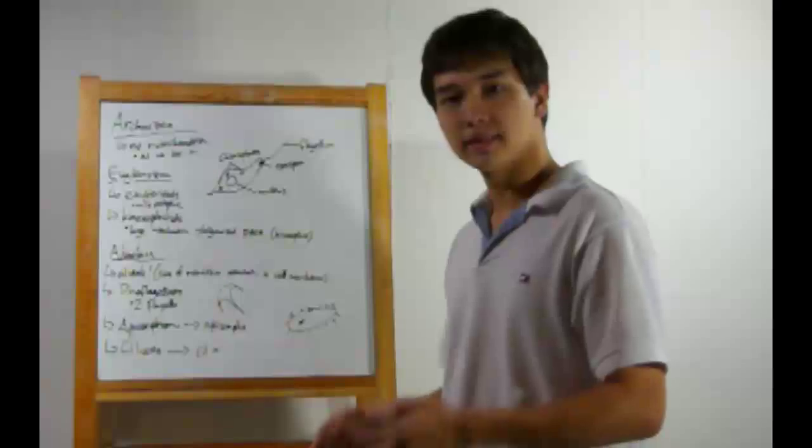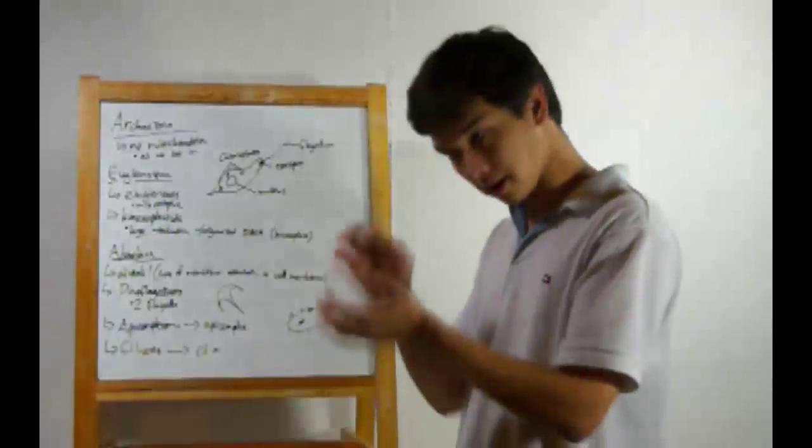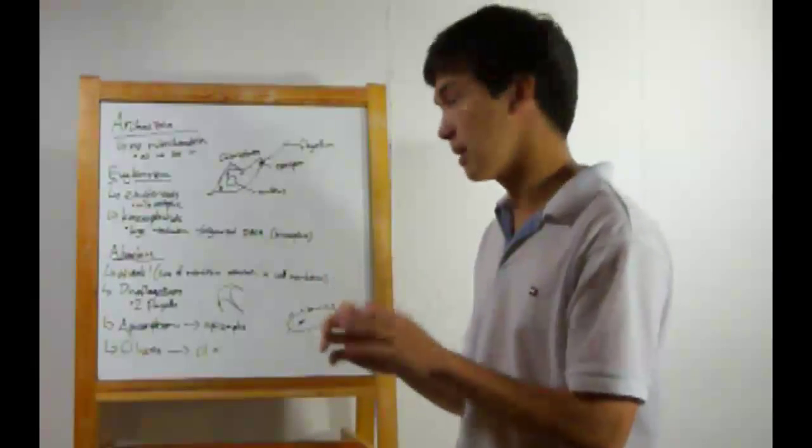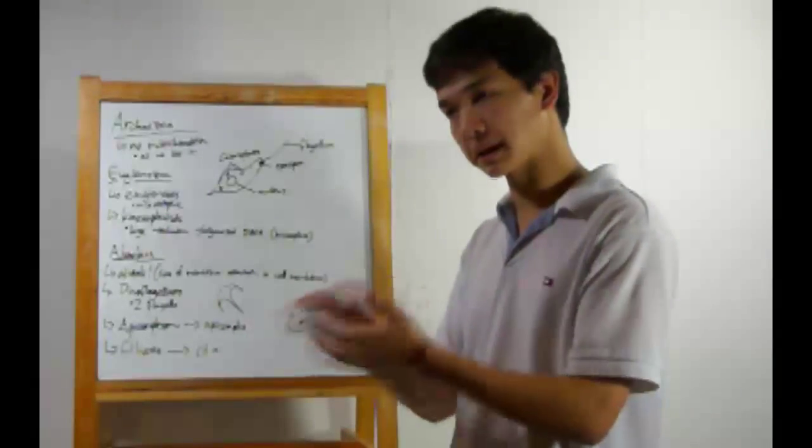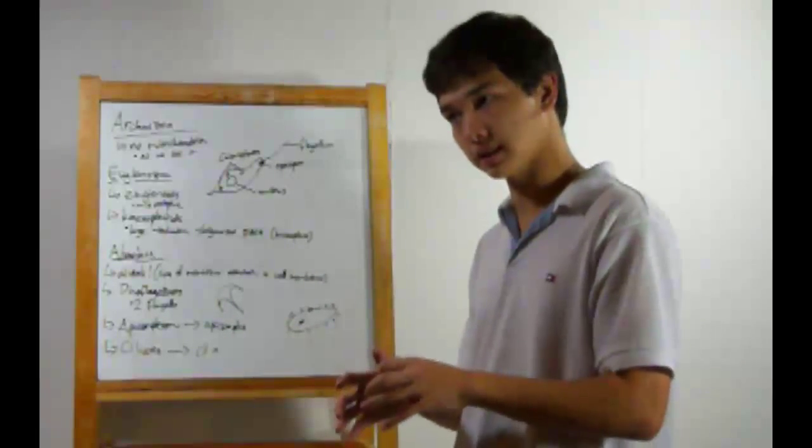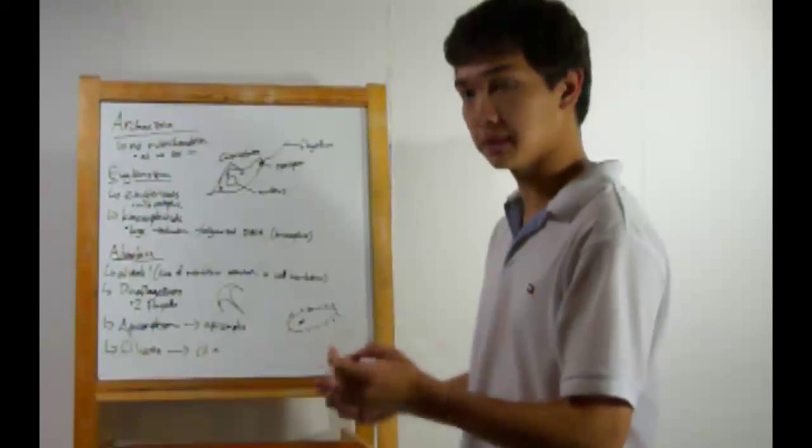Next up, the alveolata. All these have alveoli. These are hollow sacs just beneath the membrane. This includes dinoflagellates with two flagella. And these are a reddish-brown color. They do this to perform photosynthesis. But they take in light of a different wavelength as plants.